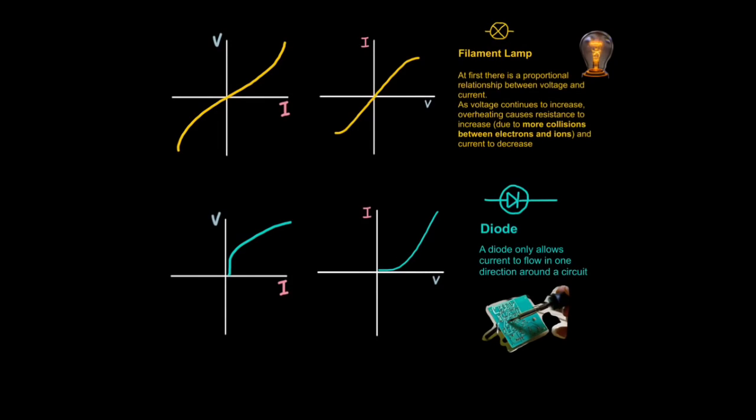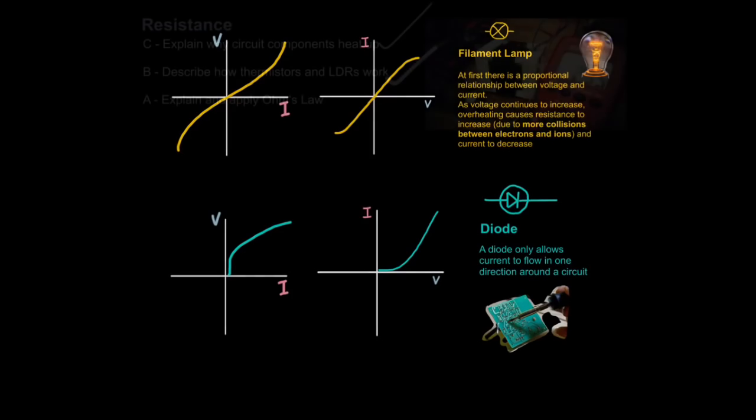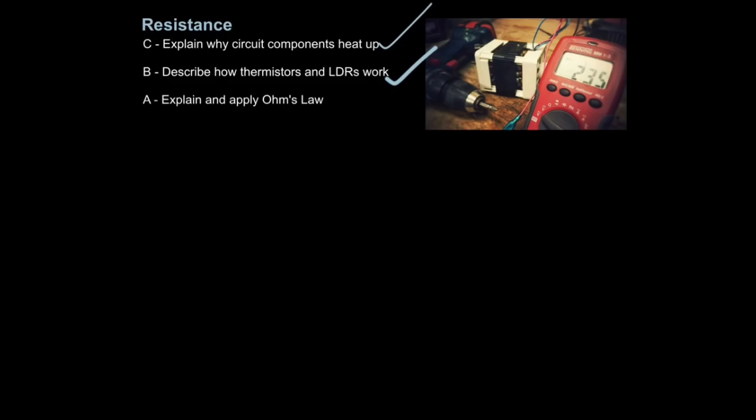It's exactly the same principle - it's just the shape changes because you've reversed voltage and current. Look out for that because it has thrown students in the past. That's how you explain and apply Ohm's law.